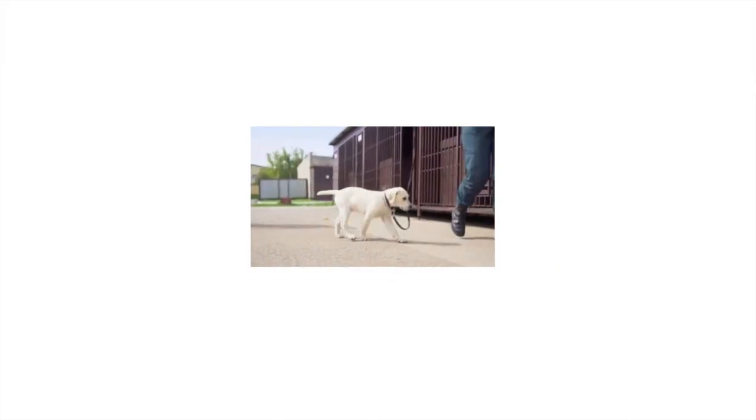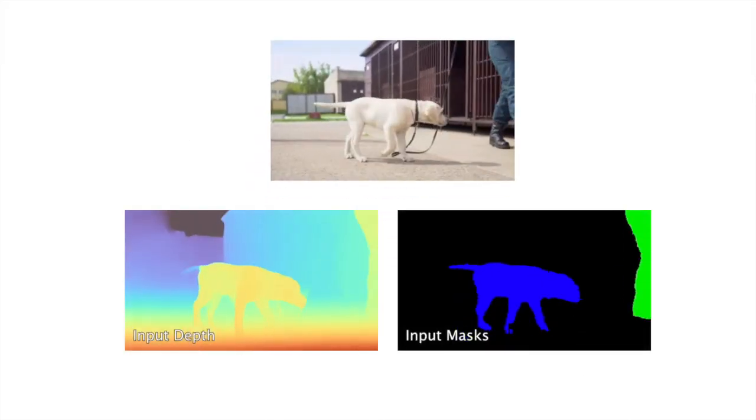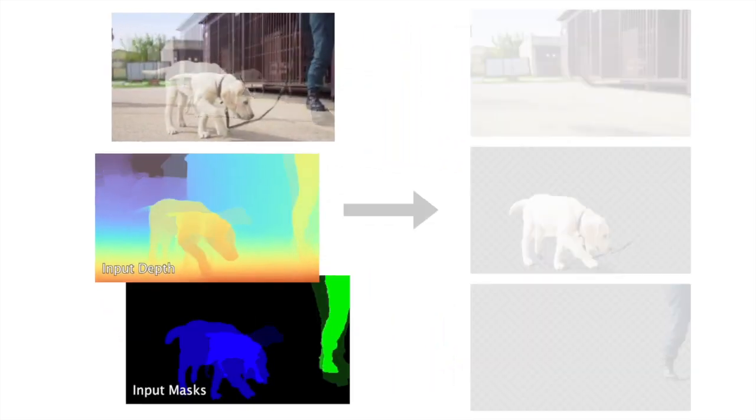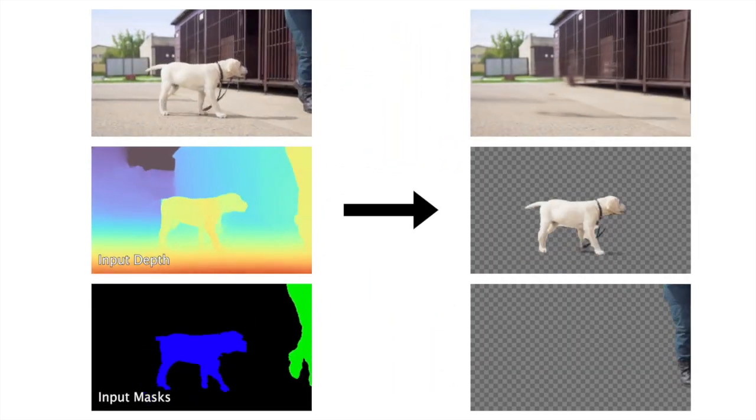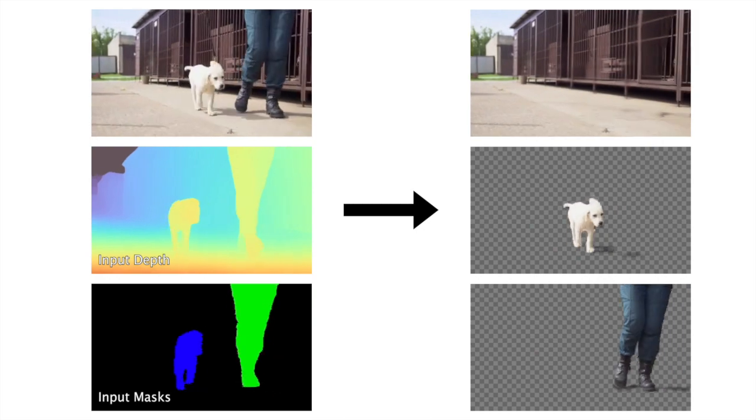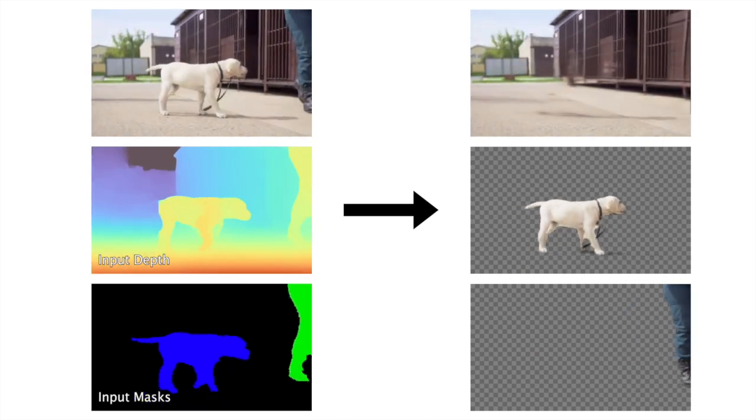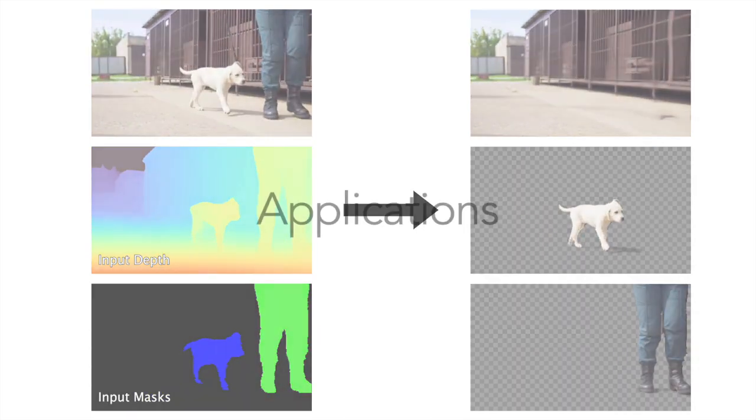Given a casual monocular video along with input mask and depth, our method outputs a layer representation consisting of one layer for background and one layer each for the puppy and person along with their respective shadows. Such a representation proves useful in various applications such as object removal.